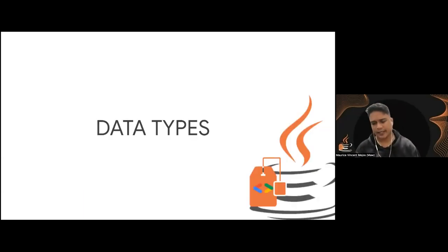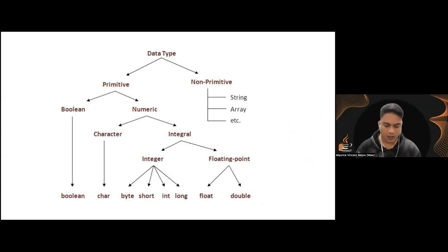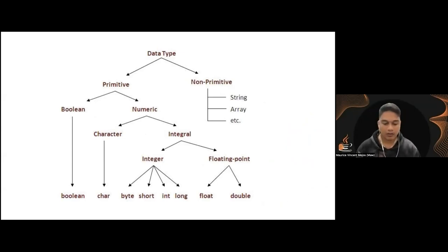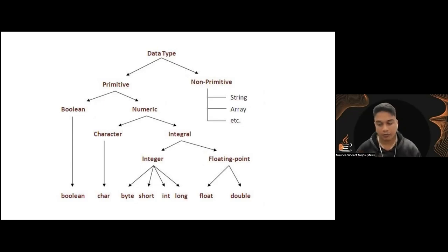Now let's go over data types. We have two types: primitive and non-primitive. Primitive types are capable of data manipulation — examples include boolean, char, byte, short, int, long, float, and double. For non-primitives, we have string, array, array list, linked list, and so on. We can even use dictionaries. But for this event, we will only be talking about string and array, since they are most commonly used for the basics of Java.